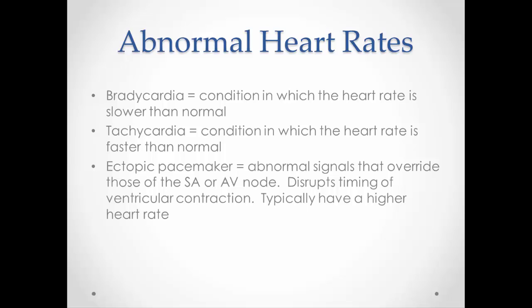Ectopic pacemakers are abnormal signals that override the SA or AV node and disrupt ventricular contraction. A common example is premature ventricular contractions — part of the ventricles decides to contract out of rhythm and contracts prematurely, almost on top of the atrial contraction. Then there's a long pause while the ventricles fill, followed by a big contraction to push all that blood out, making it feel like you're skipping a heartbeat. That ends our look at the electrical activity of the heart. Next, we'll move on to how we move blood through the heart, called the cardiac cycle.